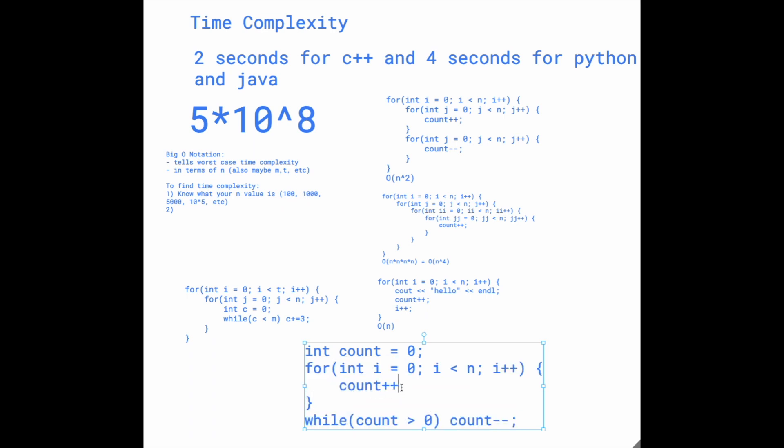If you think about it logically, count is going to equal n at the end, because it starts at zero, and then it keeps... oh, not n, it would be n minus one. Basically n, let's just say it's n. Count will be roughly n at the end of the for loop, and the while loop goes until count comes back to zero.